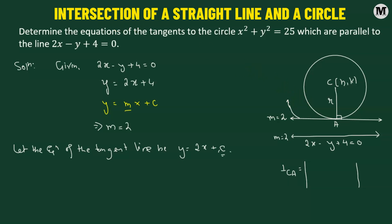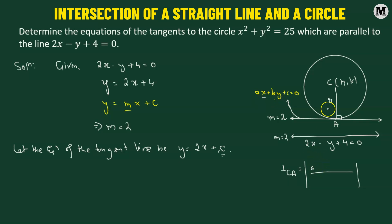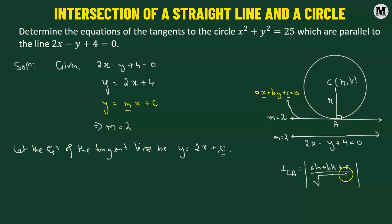If we denote the equation of the line as ax plus by plus c equals 0, then the perpendicular distance is given by the absolute value of a times h, plus b times k, plus c, divided by the square root of a squared plus b squared. This is how we can find the perpendicular distance CA, and we'll be using this idea here.